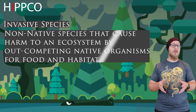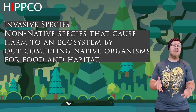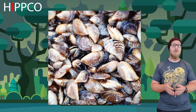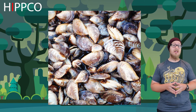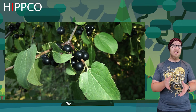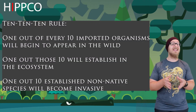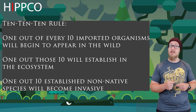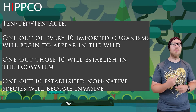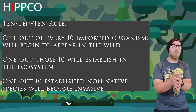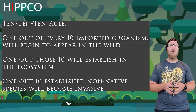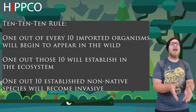Invasive species are non-native species that can harm an ecosystem by outcompeting native organisms for food and habitat. They can be introduced accidentally — like the zebra mussel, native to Europe, which arrived in the U.S. in the 1980s by stowing away on trading ships — or intentionally, like the European buckthorn brought to the U.S. in the 1800s as an ornamental plant. The 10-10-10 rule describes how species become invasive: one in ten imported organisms becomes established, one in ten of those establishes itself in the ecosystem, and one in ten of those actually becomes invasive. Non-native and invasive are not the same thing.